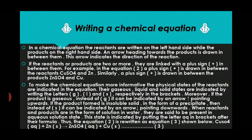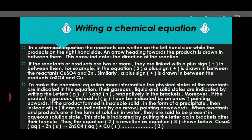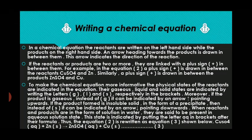Now come to the second point. If the reactants or products are two or more, they are linked with a plus sign in between them. So in the reaction, if there are two reactants or two products, we use a plus sign between them. For example, copper sulphate and zinc have a plus sign in between them. Similarly, a plus sign is drawn between the products — zinc sulphate and copper.